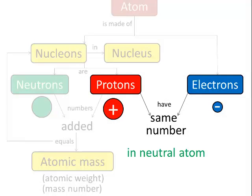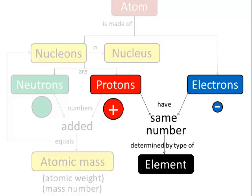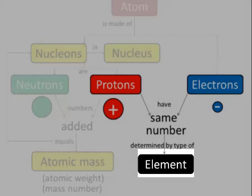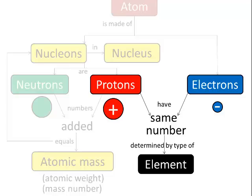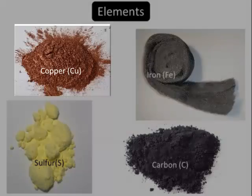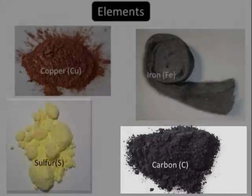And this number, the number of protons, which is also the number of electrons, is determined by the type of element. What do I mean by that? Here are four examples of elements: copper, iron, sulfur, and carbon.